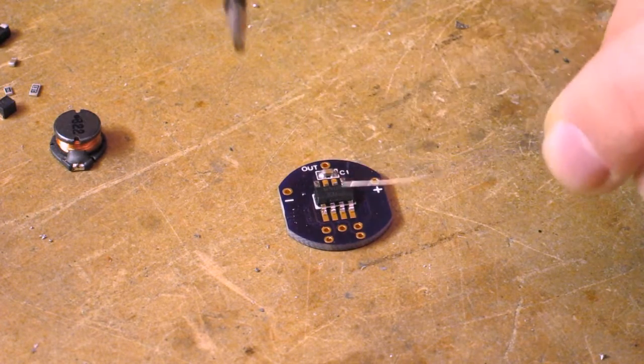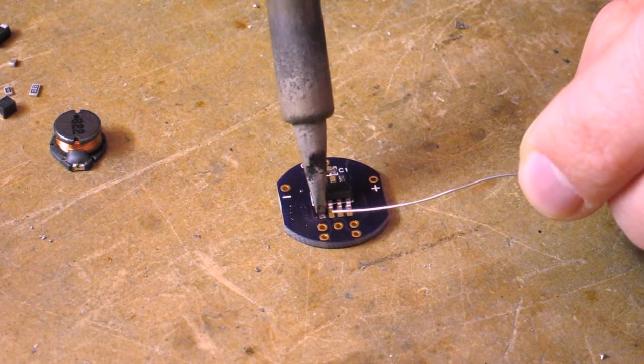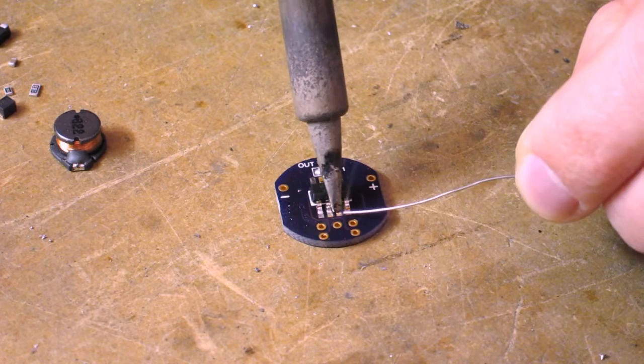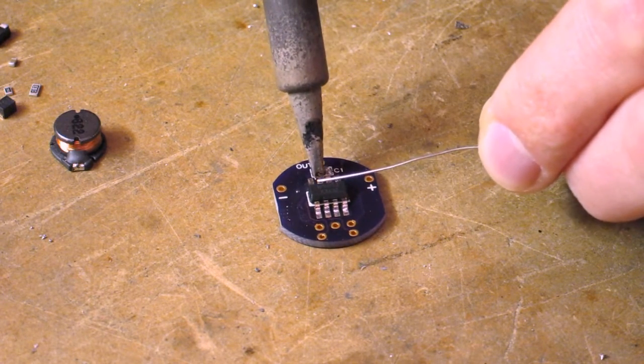If you accidentally bridge two pins with solder, you can use a piece of solder braid to remove that.